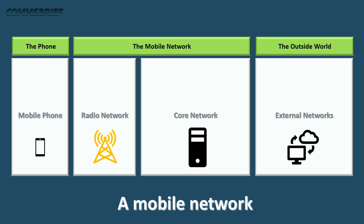Today's video is about the network architecture of GSM networks, with and without GPRS enhancement. GSM without GPRS can only enable phone calls and text messages — no mobile data. GPRS was introduced much later in the 1990s and it could provide internet services on your phone, which was a huge thing at the time.